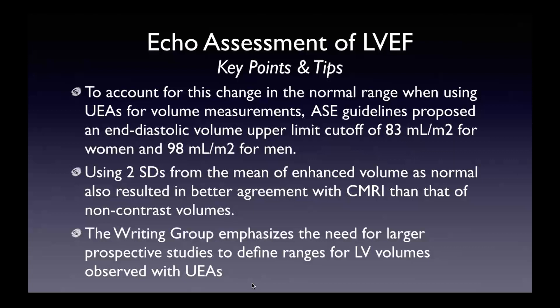From the contrast guidelines, we don't have good normative data for contrast volumes and ejection fraction. There are a couple of small studies integrated into the contrast guidelines. The guidelines recommended an end-diastolic volume upper limit cutoff of 83 mL for women and 98 mL for men based on a small study of contrast in normal patients, with two standard deviations above normal data leading to better agreement with CMR when using contrast echo. The writing group did emphasize the need for larger prospective studies to define different ranges for LV volumes observed with ultrasound enhancing agents.